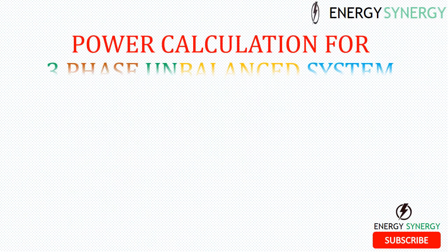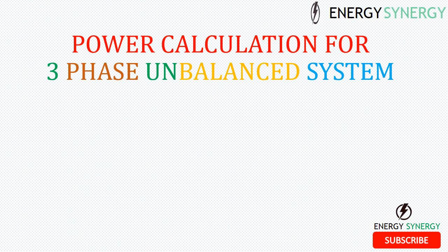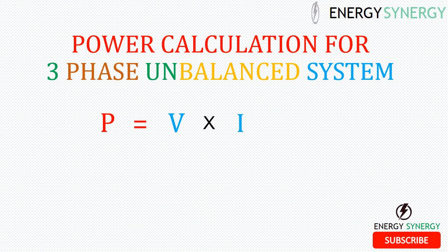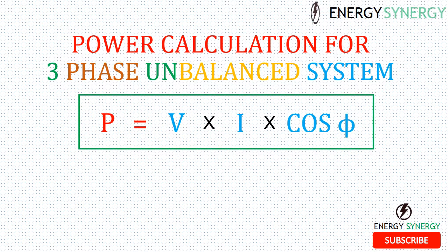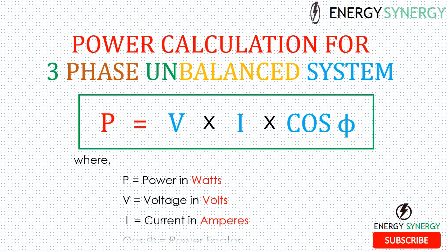The formula to calculate power in a three-phase unbalanced system is: Power = V × I × cos φ. Here the value of voltage is 240 volts. So that covers balanced and unbalanced power system calculations.